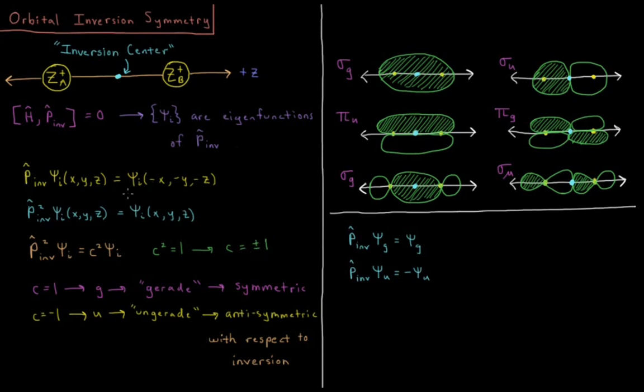So some of our orbitals are going to give back the same orbital when we apply the inversion to them. Some are going to give the same orbital but with the opposite sign. So these eigenvalues allow us to assign labels to our individual molecular orbitals of g or u, meaning gerata or ungerata, which connote symmetry or anti-symmetry with respect to inversion.